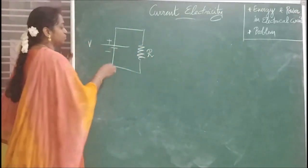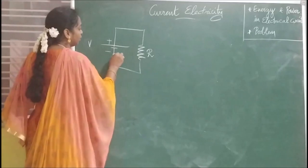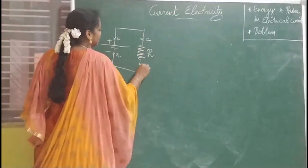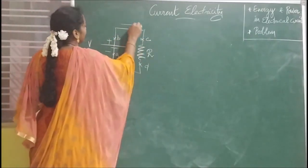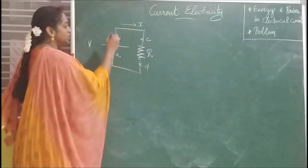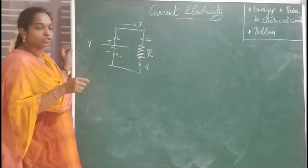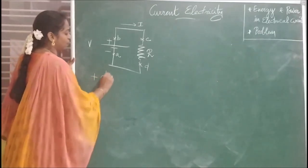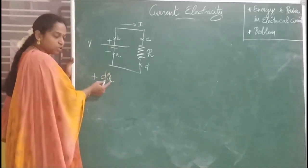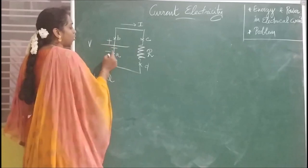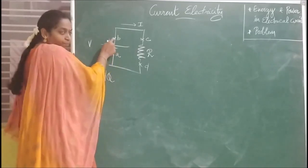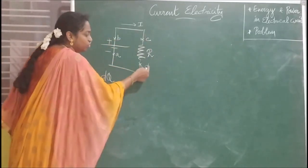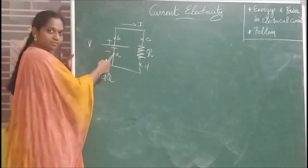I am going to take off the points in the circuit and name them A, B, C, and D. A current I has been flowing through this circuit. We are going to assume that a small amount of positive charge dQ passes through the battery from point A to B, then passes through the resistor from point C to D, and then again reaches point A.